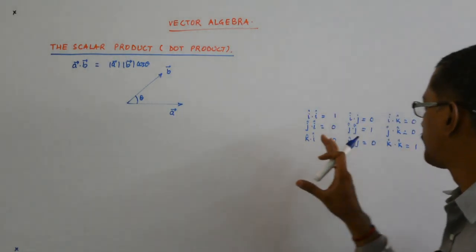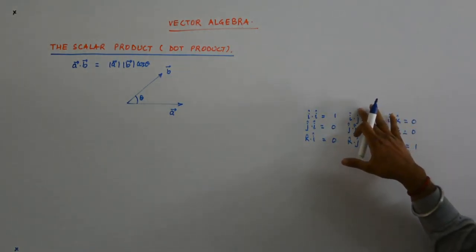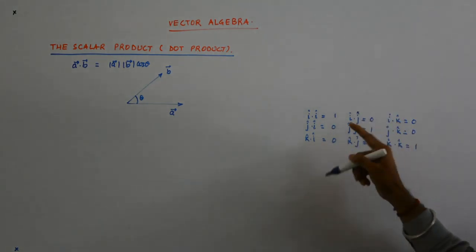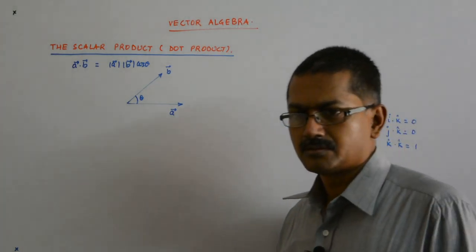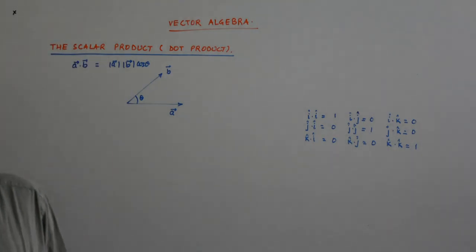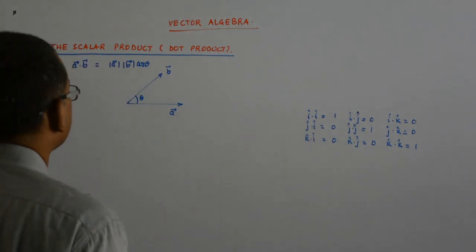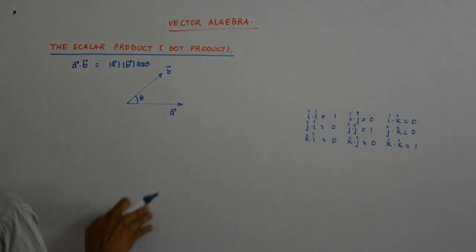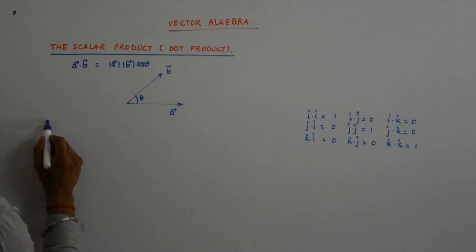We had also seen that depending on that, based on that definition, the standard unit vectors when dotted with the others, they will give us this. So now we come to two properties of dot product.